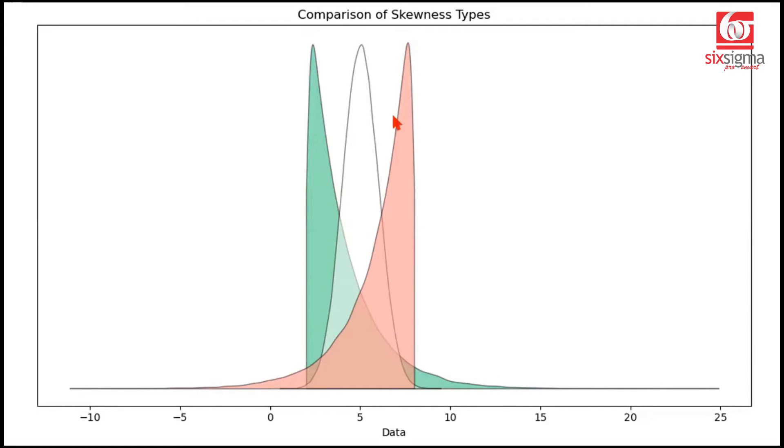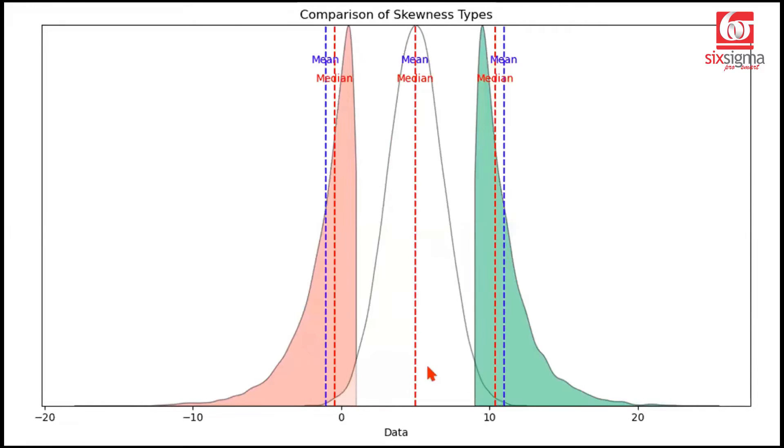Similarly, for a left skewed distribution, this would be a negative value. And the greater the skewness, the greater would be the value in magnitude. So if we keep these apart, there's one more interesting takeaway that happens due to skewness, which is visible here.